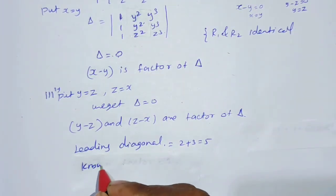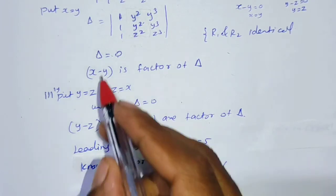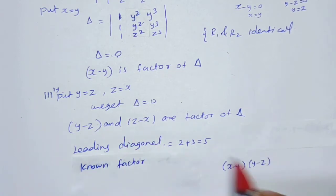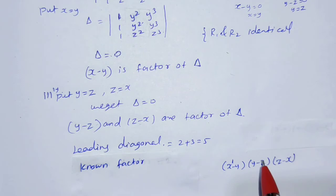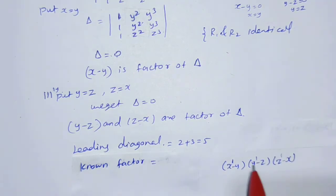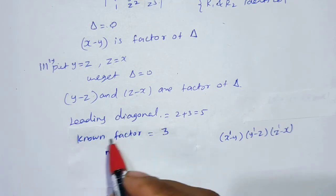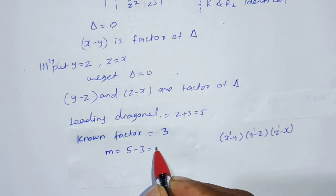Now we identify the known factors: x minus y, y minus z, and z minus x. Each known factor has degree 1, so the total known factor degree is 1 plus 1 plus 1 equals 3. Therefore M equals leading diagonal degree minus known factor degree: 5 minus 3 equals 2. So the remaining unknown factor has degree 2.